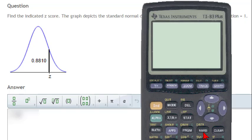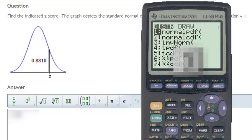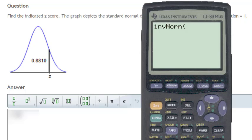To get to the inverse normal function, first press the yellow 2nd key, followed by the distribution key, which is found above the VARS key. Now press the 3 key, and the inverse normal function will be pasted to the home screen.